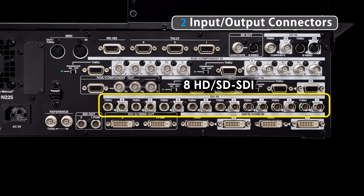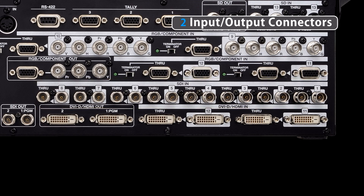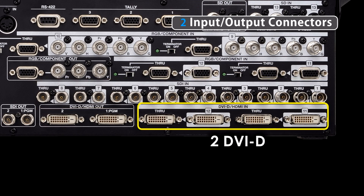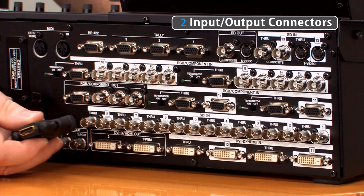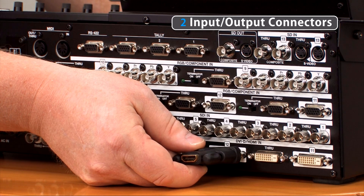In the second row from the bottom, we have eight HD, SD, SDI inputs. Each one of these are truly multi-format in that they can independently handle standard def or high def signals along with the differing aspect ratios. In the bottom row, there are two DVI-D inputs. These can be easily changed to HDMI by using a simple adapter.